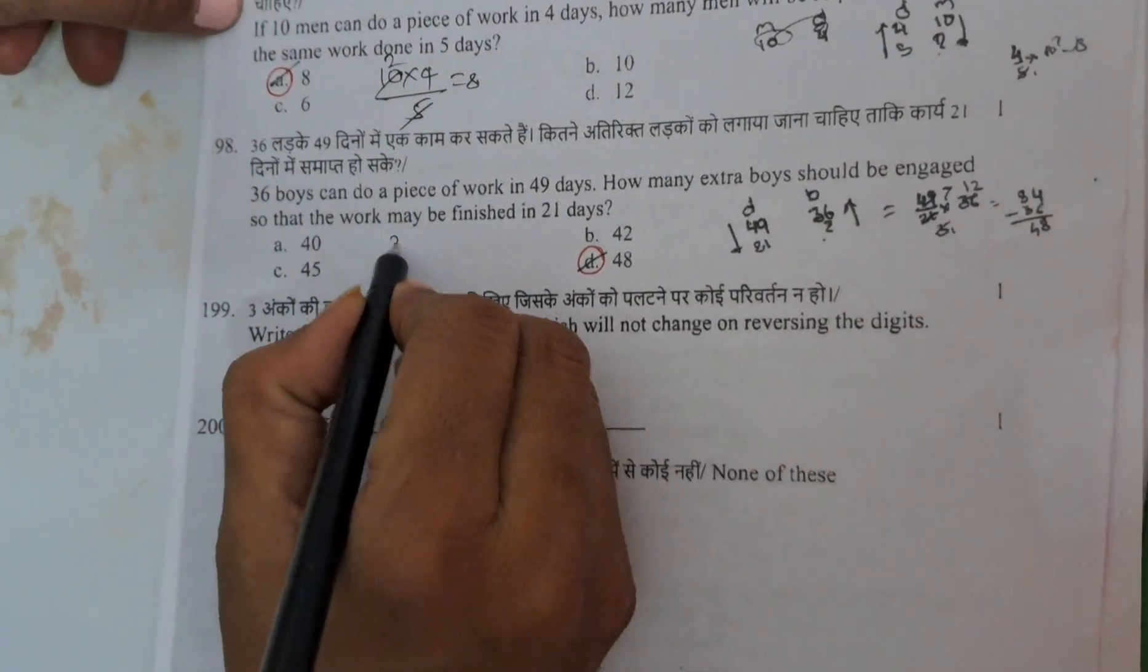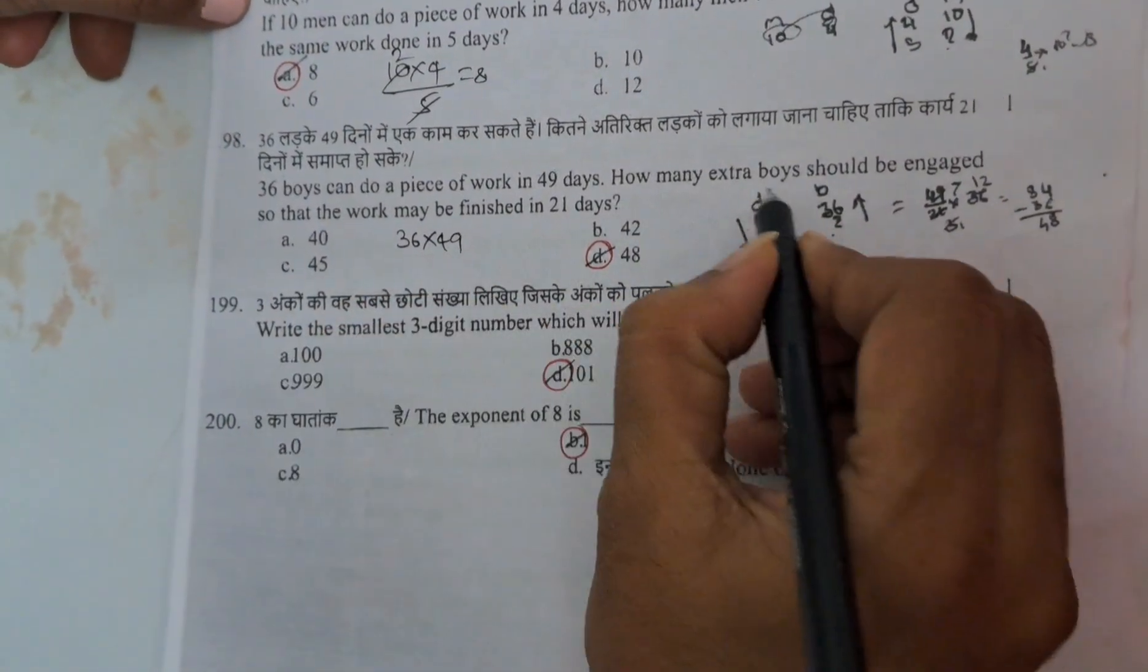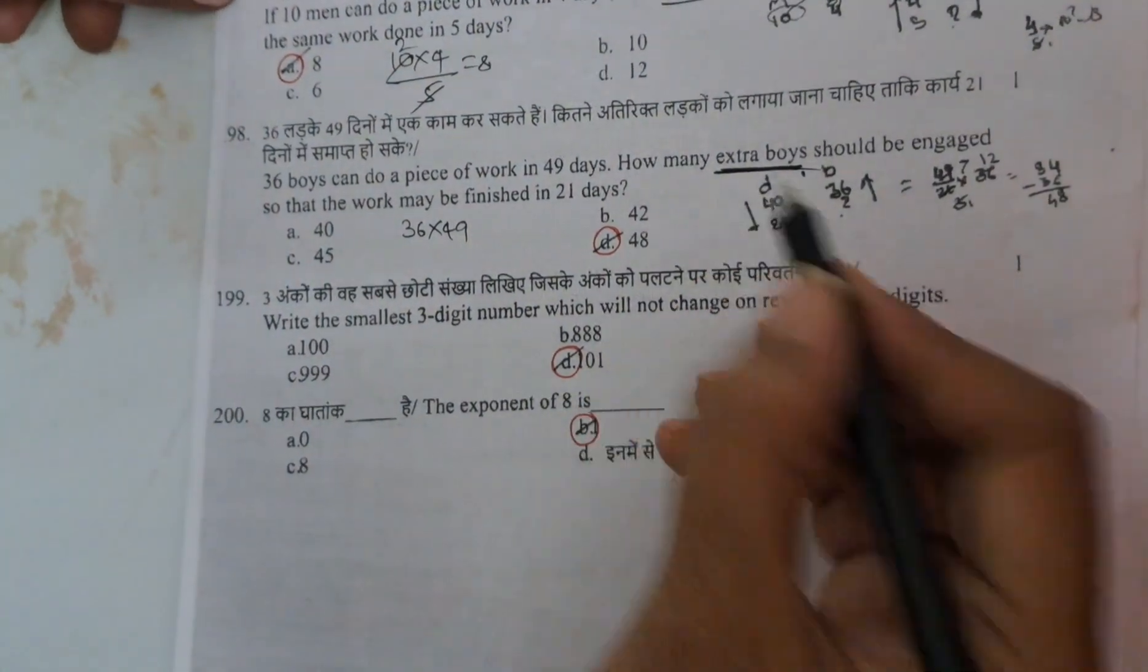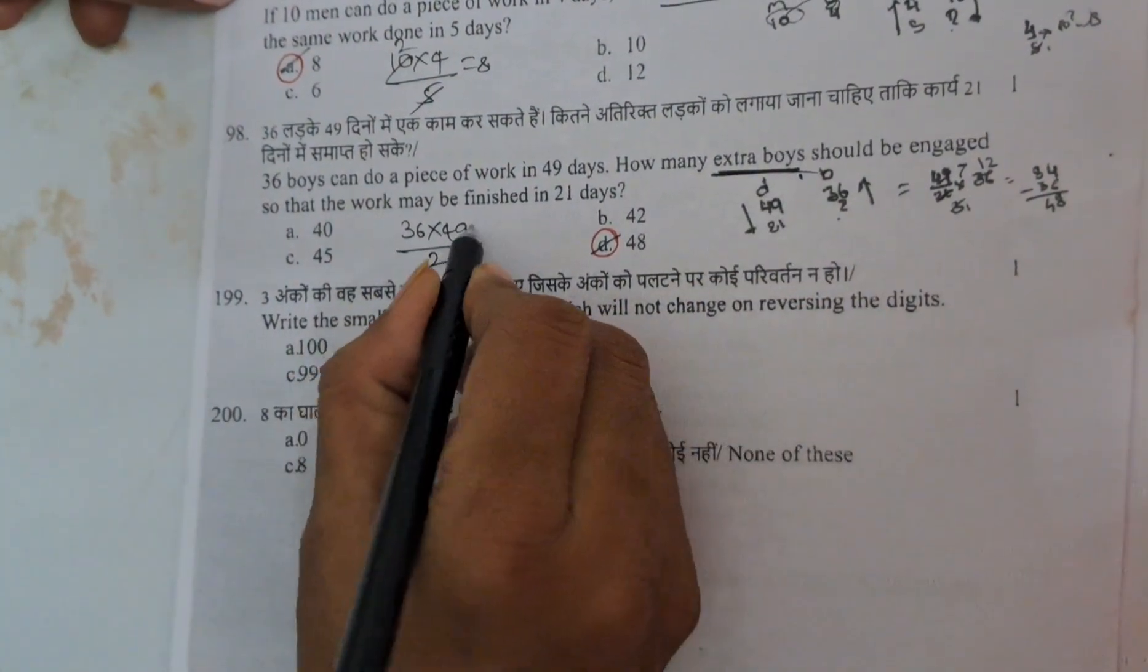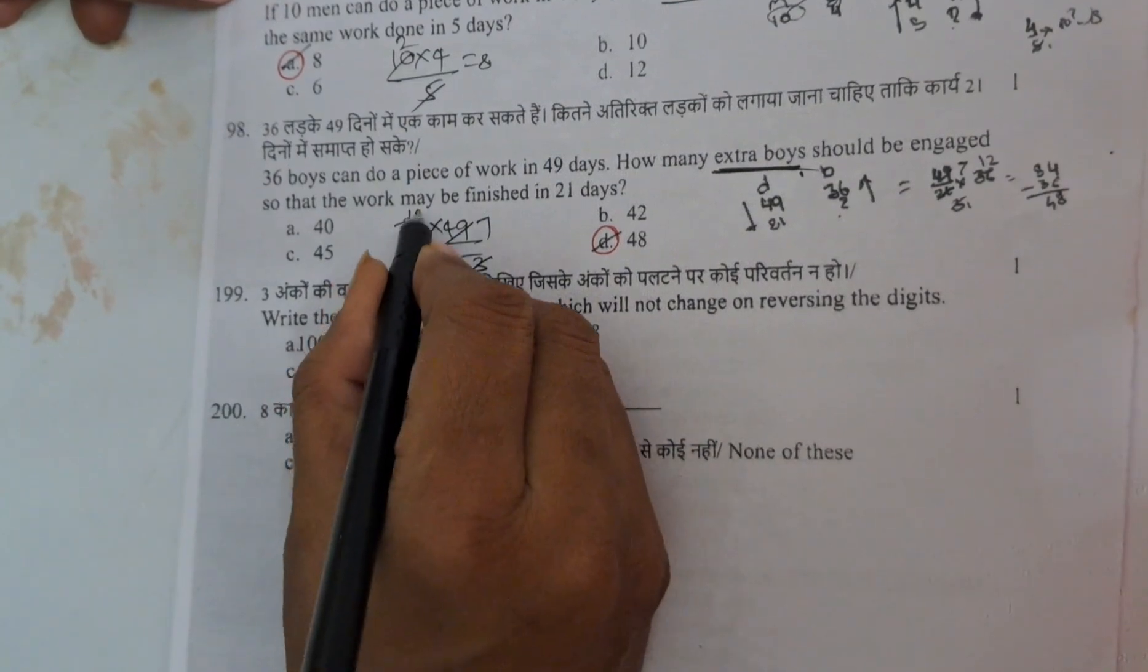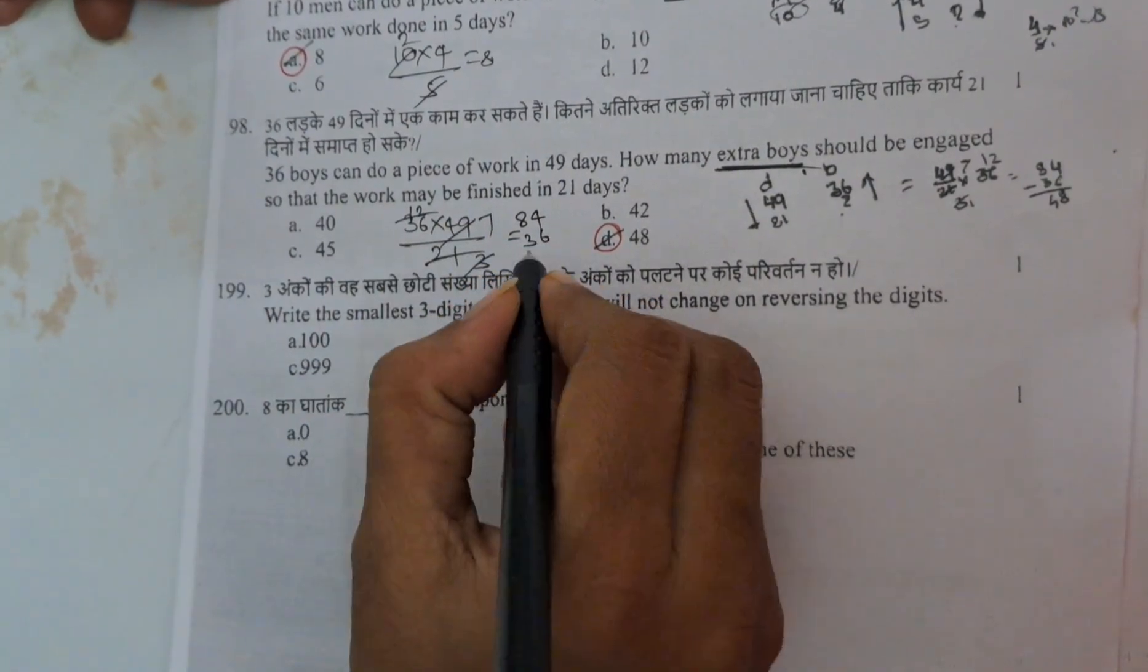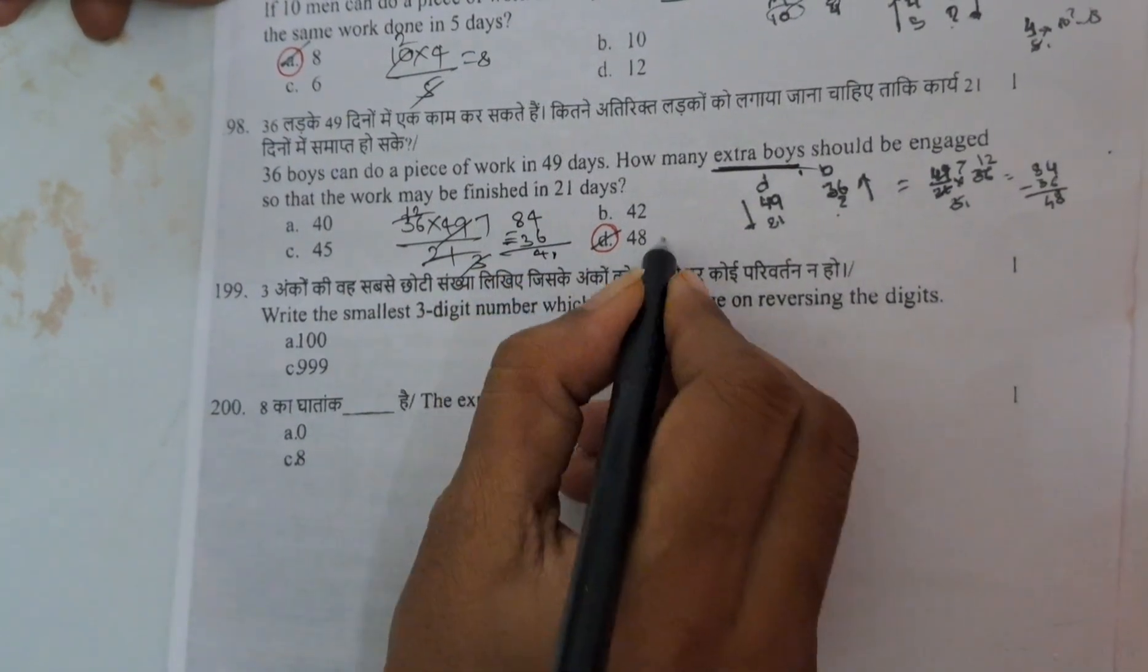Here next question, 36 boys can do work in 49 days. How many extra boys? Here extra boys. Here directly how many men they asked. Here extra boy. By 21, if you do 84, we need. Already we have how many boys? 36. If you do subtraction, the answer is 48.